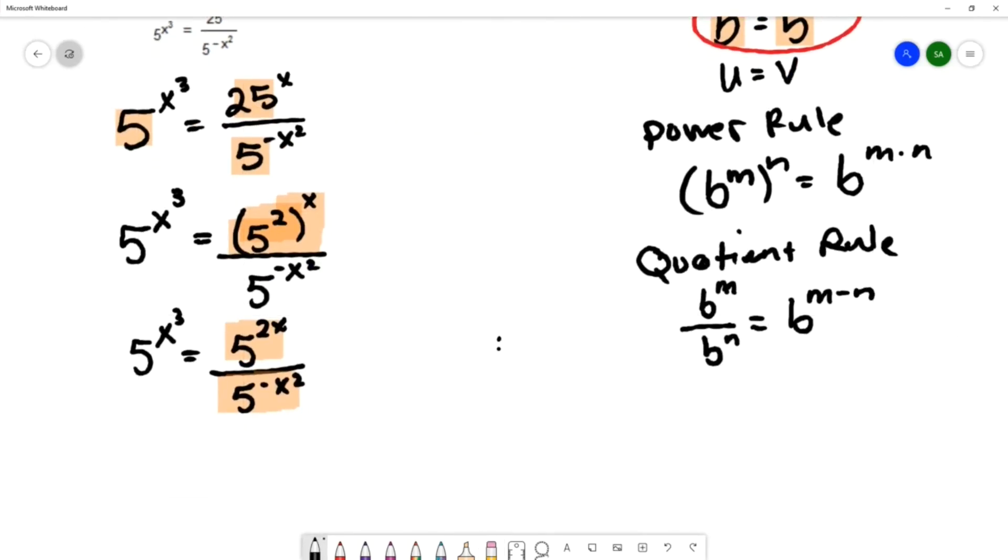So on the right-hand side here, we will notice that we do have the same base. So we can apply that property of the quotient rule to get 5 to the 2x minus negative x squared.